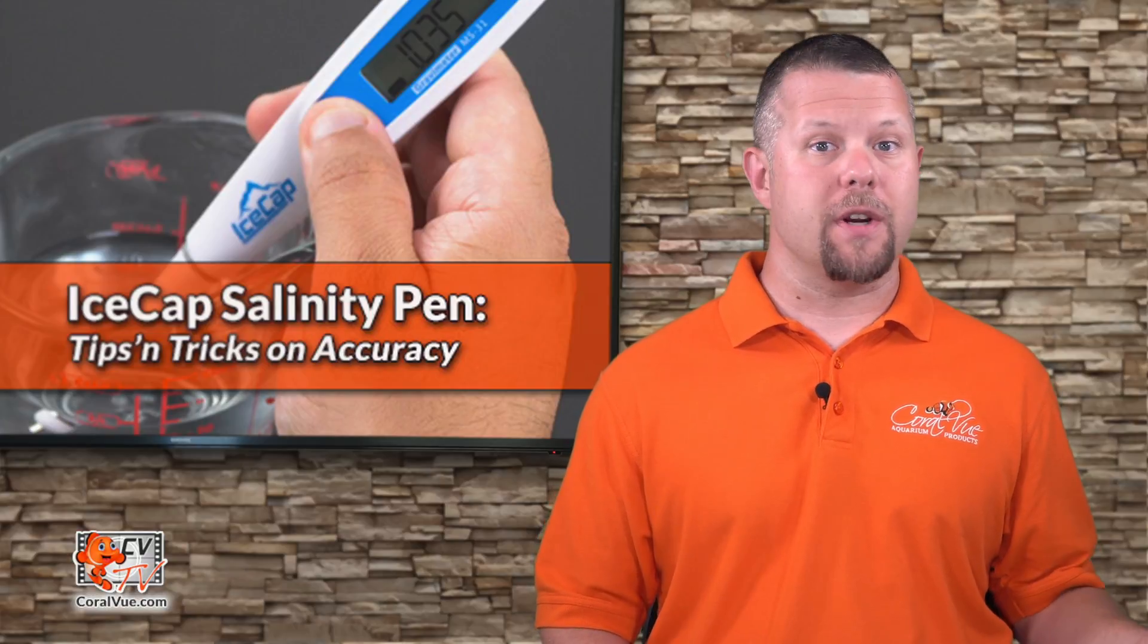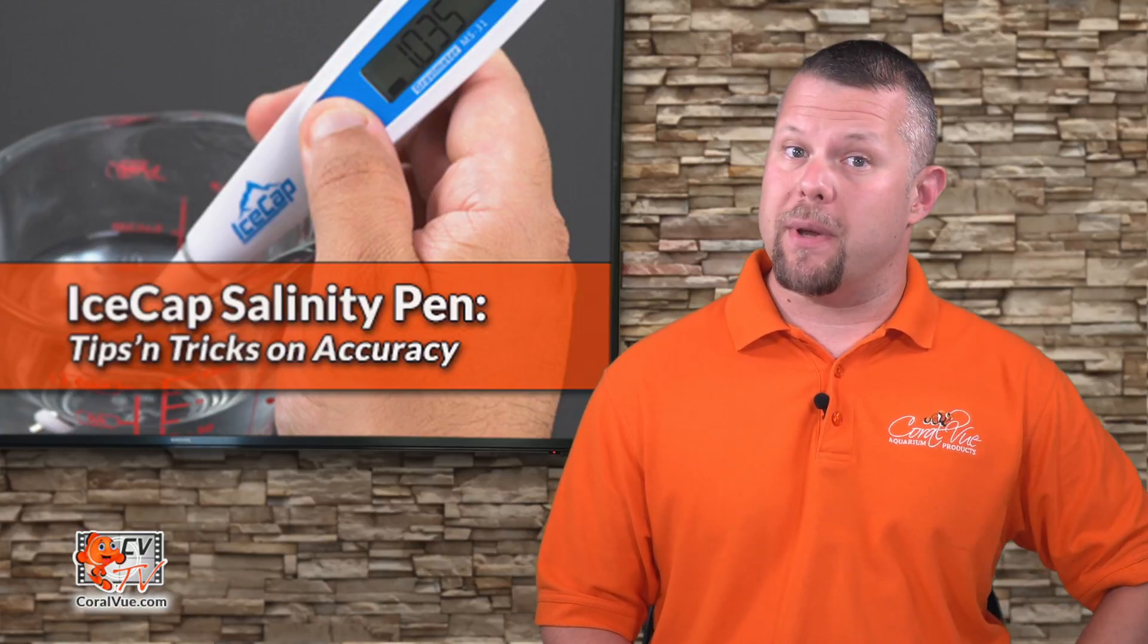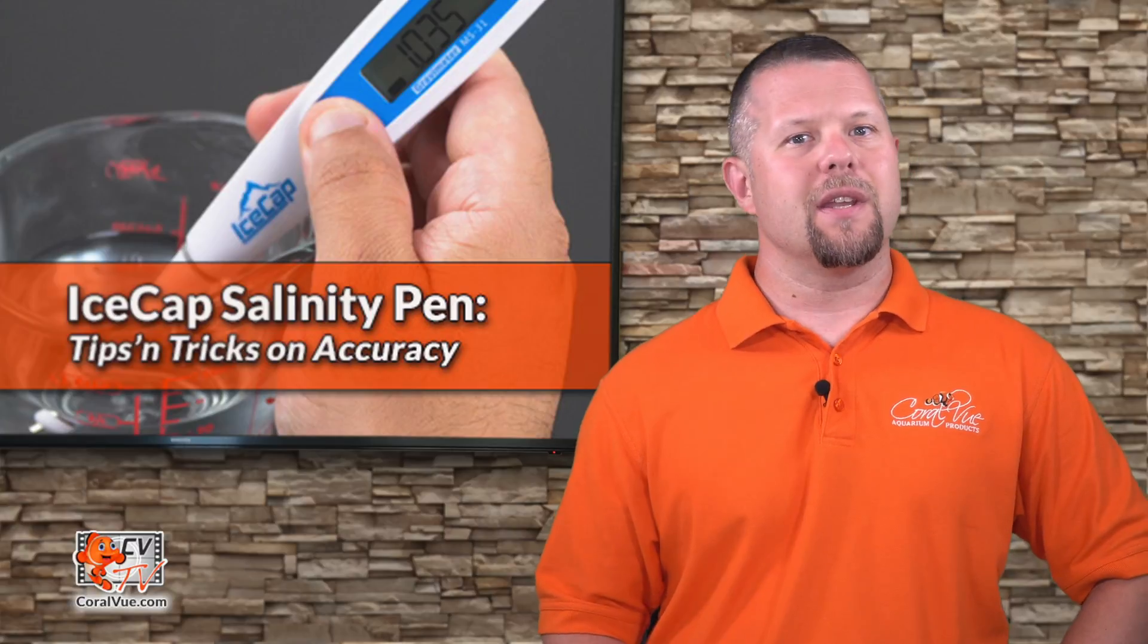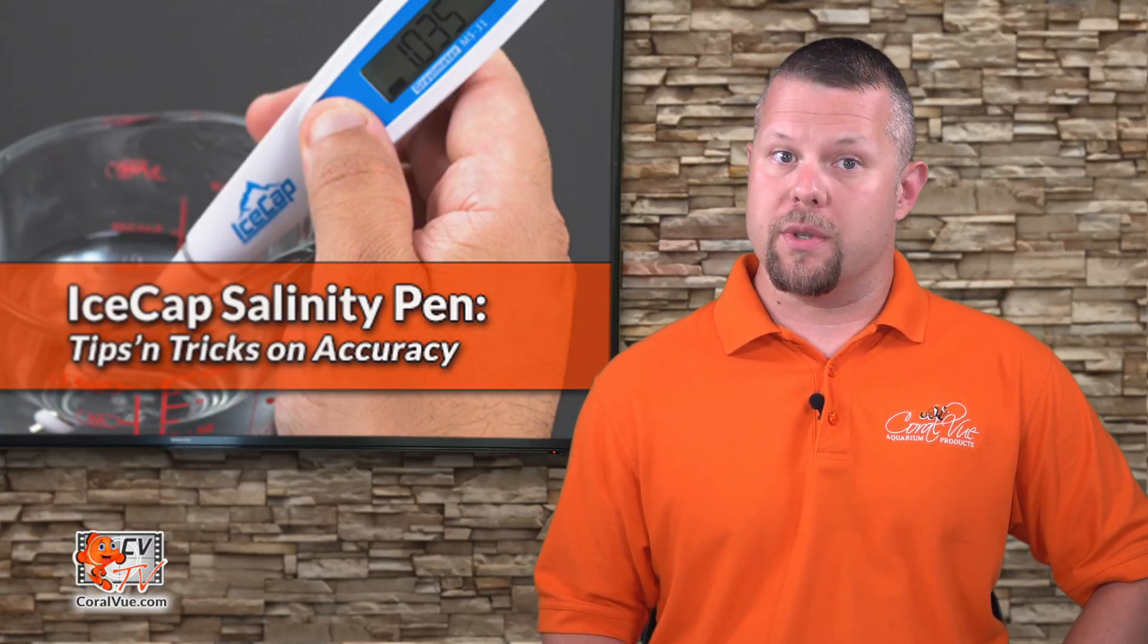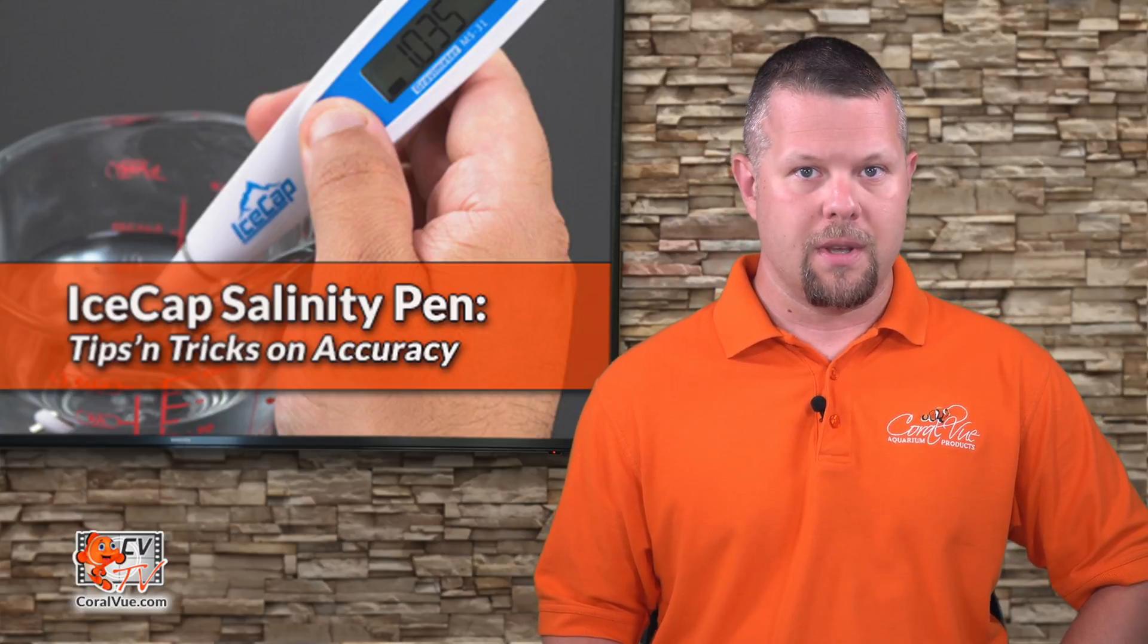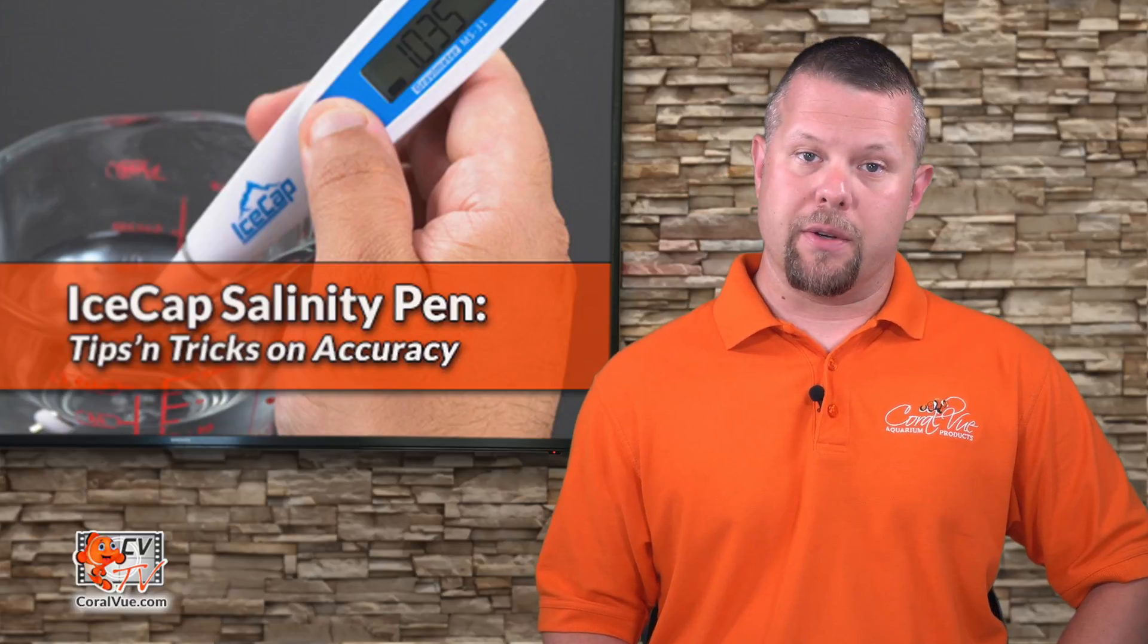If after installing a fresh set of batteries you see the pen is still a little off, then let's proceed to reset the pen to its factory calibrated settings. This usually solves inaccurate readouts.